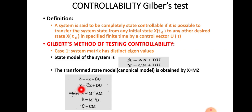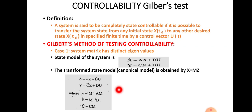The gramian matrix Γ equals M⁻¹AM, where M is the modal matrix. B̂ equals M⁻¹B, and Ĉ equals CM. These are the transformation equations for converting the state model to canonical form in the case of distinct eigenvalues.